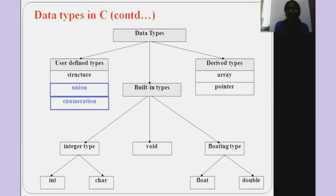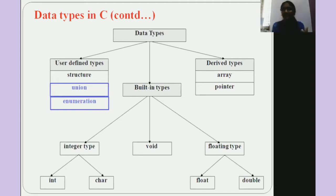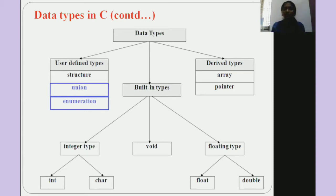To summarize the built-in data types: int accepts only integer values; char accepts characters; void is an empty data type; float takes decimal values; and double also takes decimal values but with more accuracy and a longer range. These are the built-in data types we have discussed today.